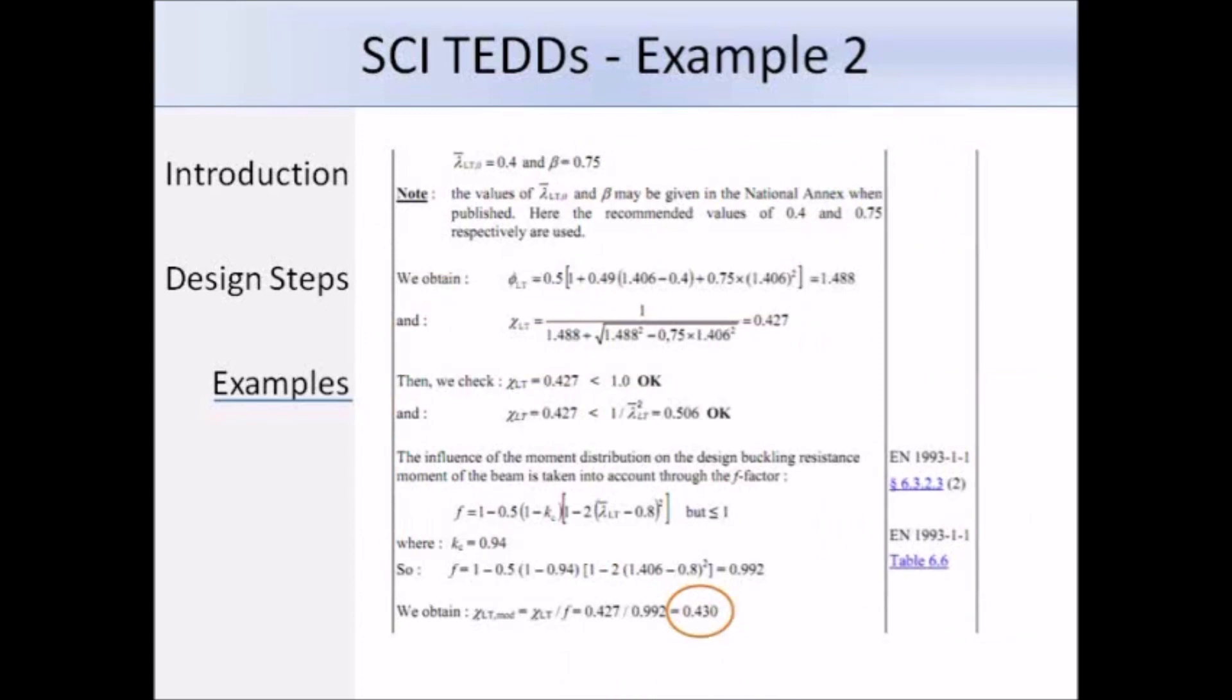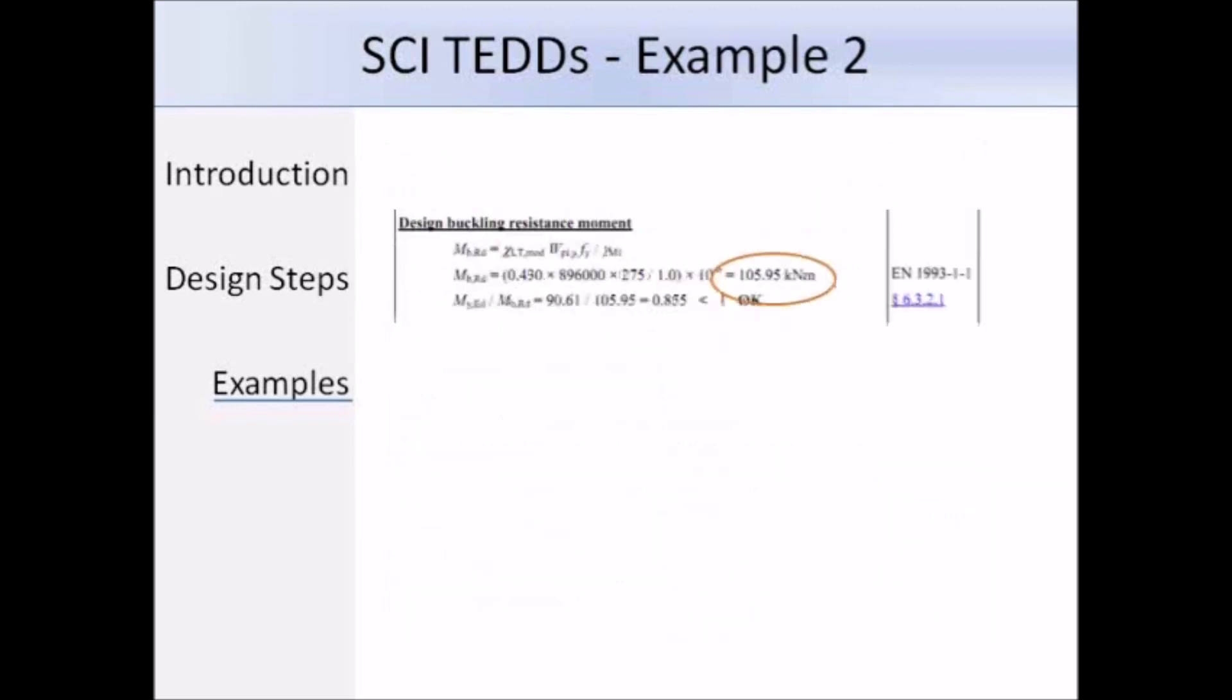We can see we can use the f factor because we're using a rolled section, so f works out as 0.992, and then chi LT mod works out as 0.430. So that offers slightly more resistance than chi LT. So working out the design buckling resistance using the modified chi LT value, we get a design buckling resistance of 105.95 kNm, and that's greater than our design moment of 90.61 kNm. Therefore, the section is okay at resisting LTB.